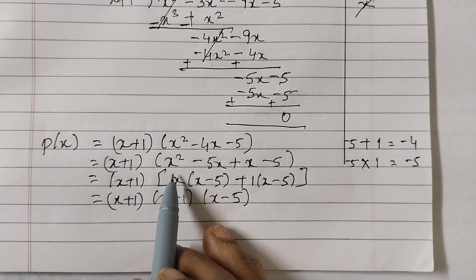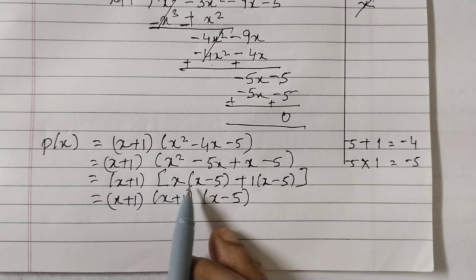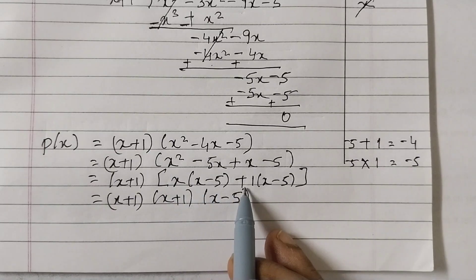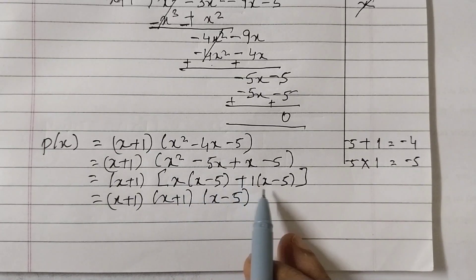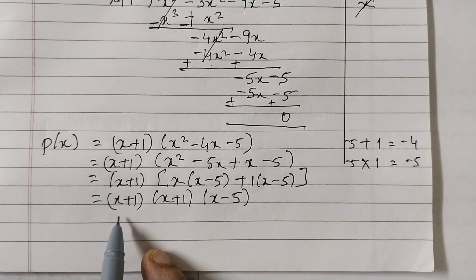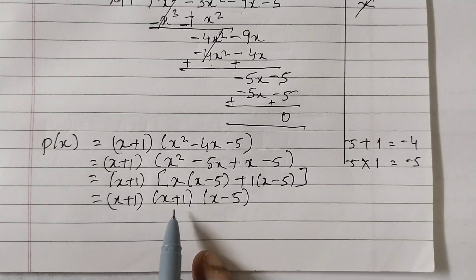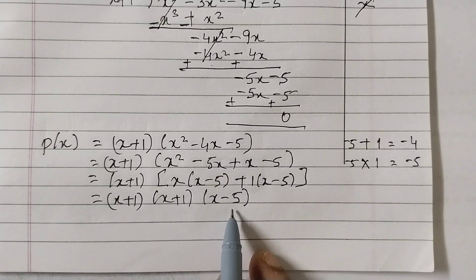So x plus 1, x squared minus 5x plus x minus 5. So x plus 1, we took the common factor x here: x minus 5 remaining plus here nothing is there, so 1, x minus 5. So the factors are x plus 1, x plus 1, x minus 5.